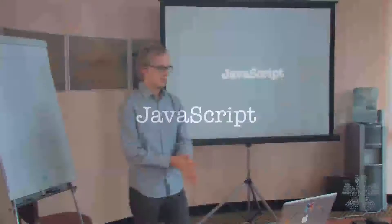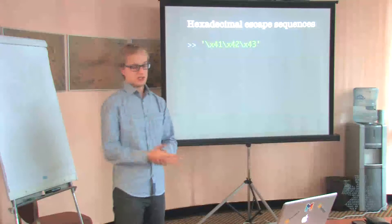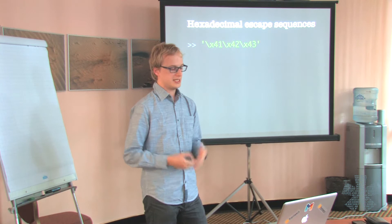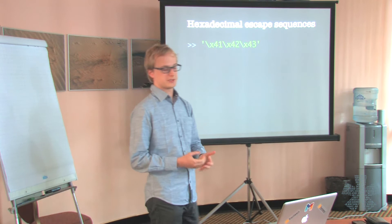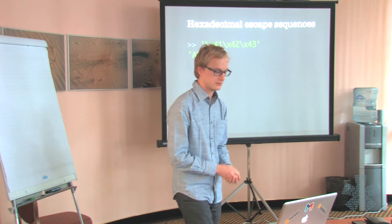Now that we have a basic understanding of Unicode, let's see how it applies to JavaScript strings. You may have seen hexadecimal escape sequences — they start with a backslash followed by an X and then two hexadecimal digits. These two hexadecimal digits refer to a Unicode code point, so this is a way to represent a symbol without using the symbol itself. For example, this string is equal to ABC, and similarly this would be equal to abc in lowercase.